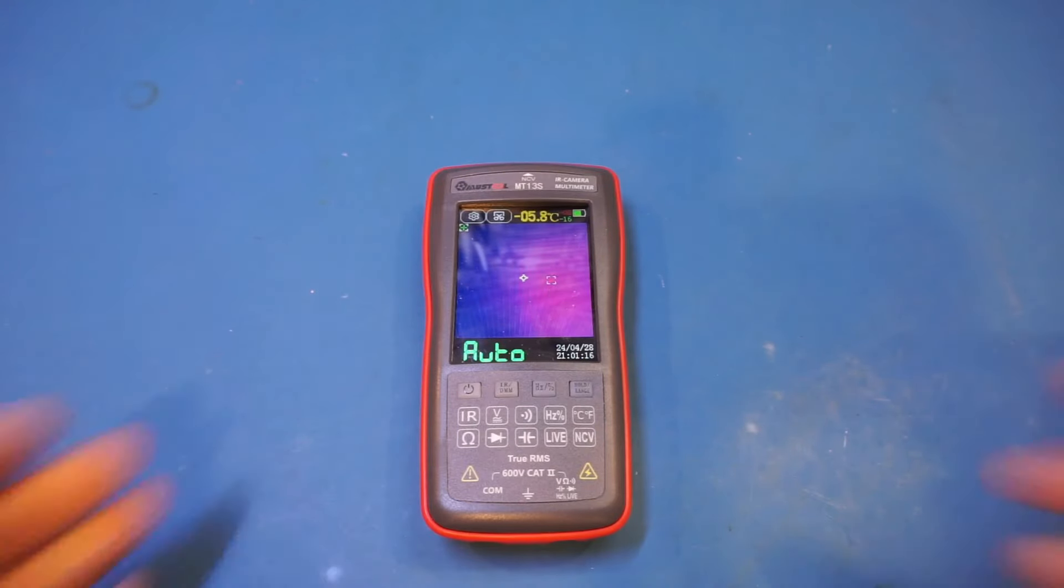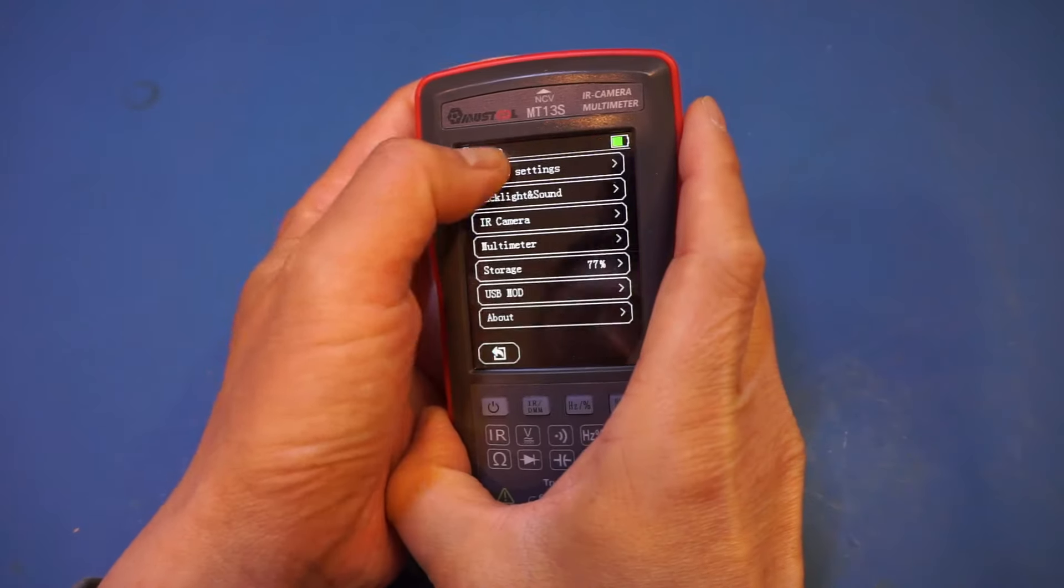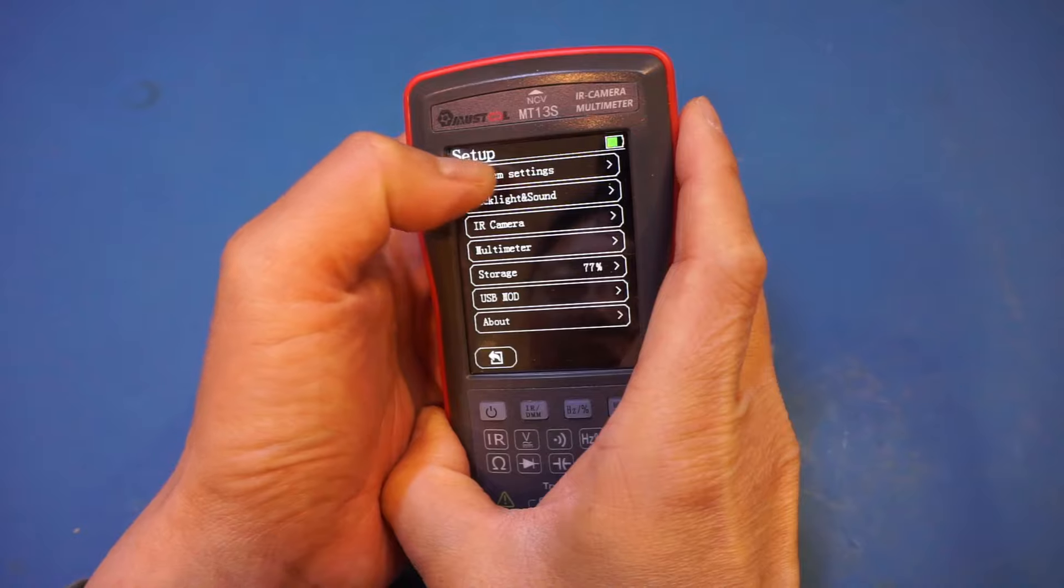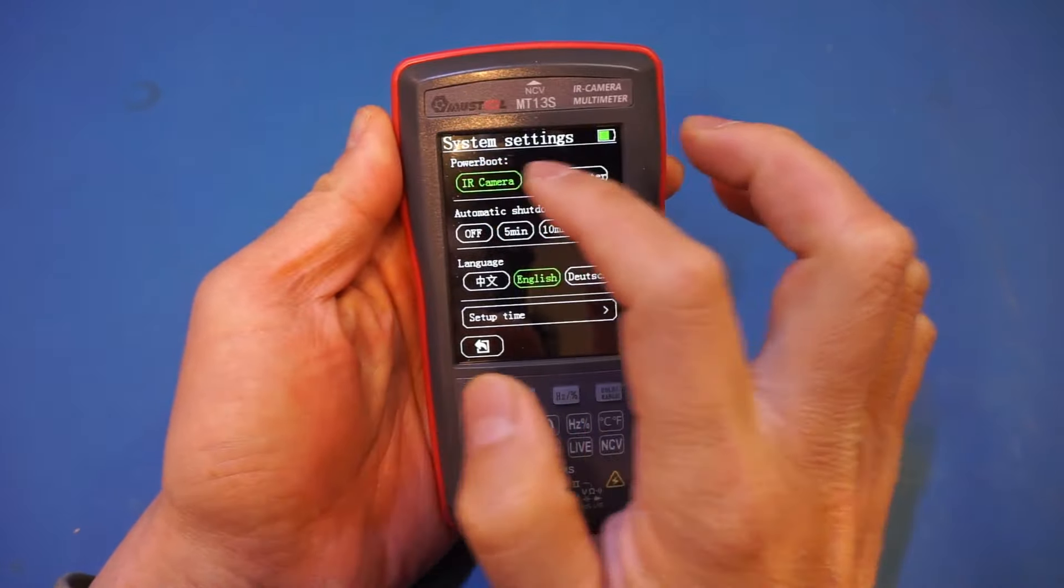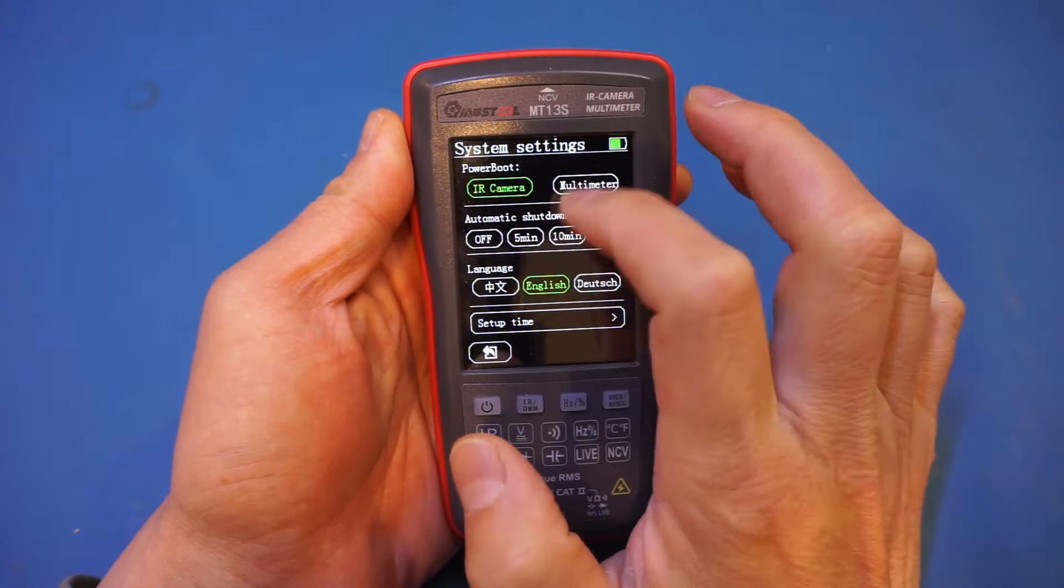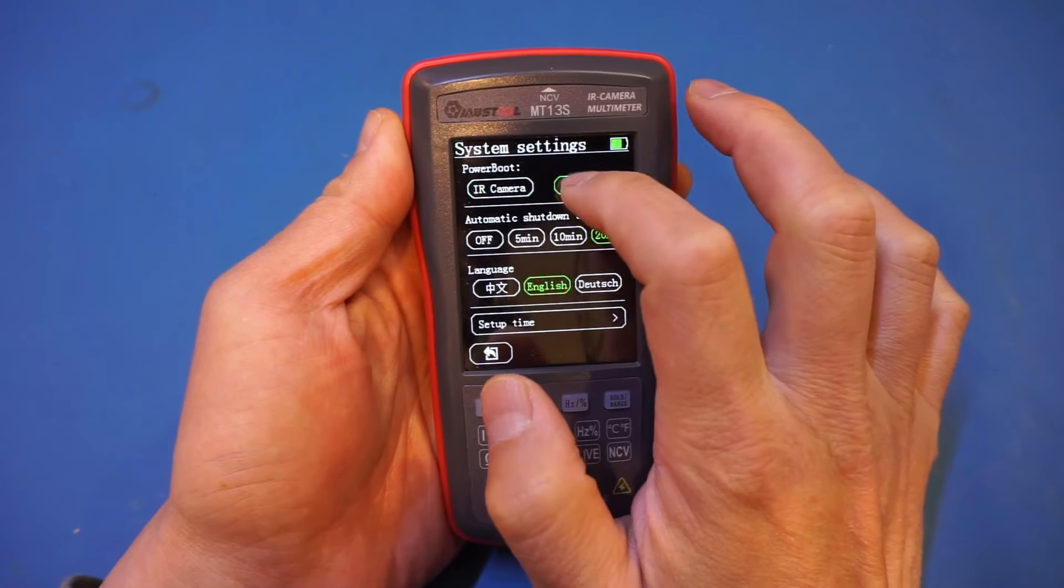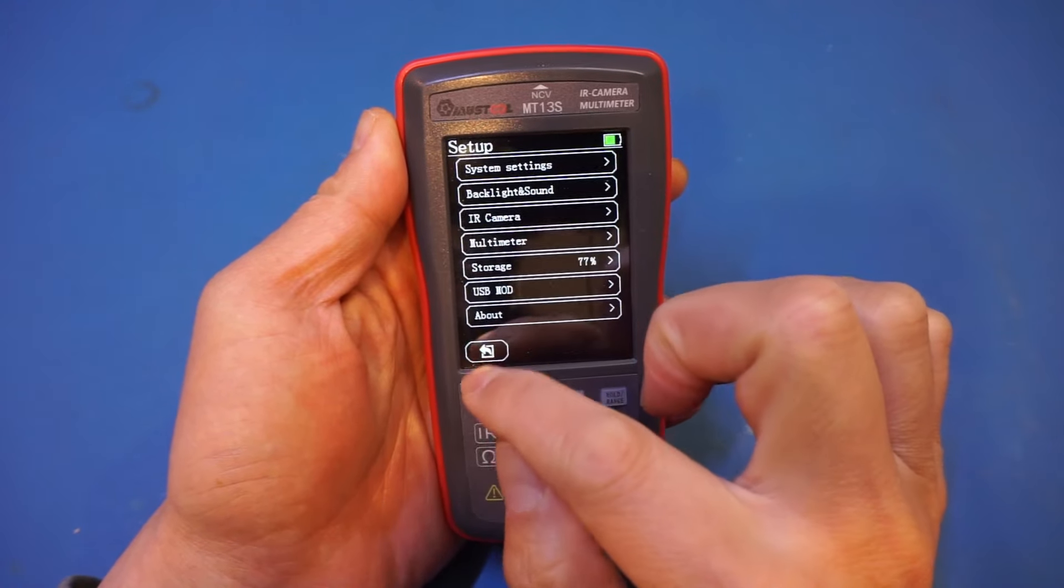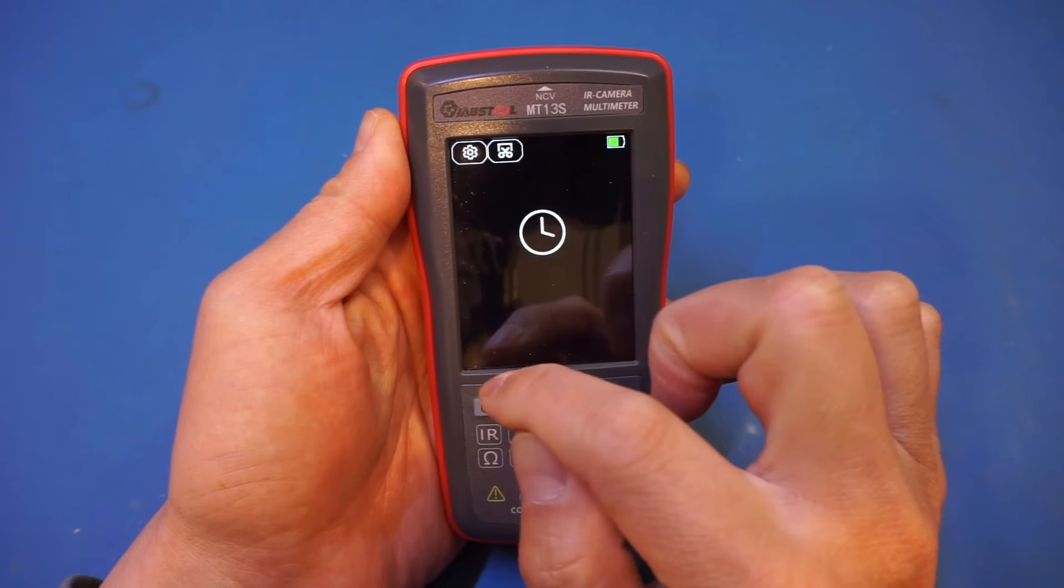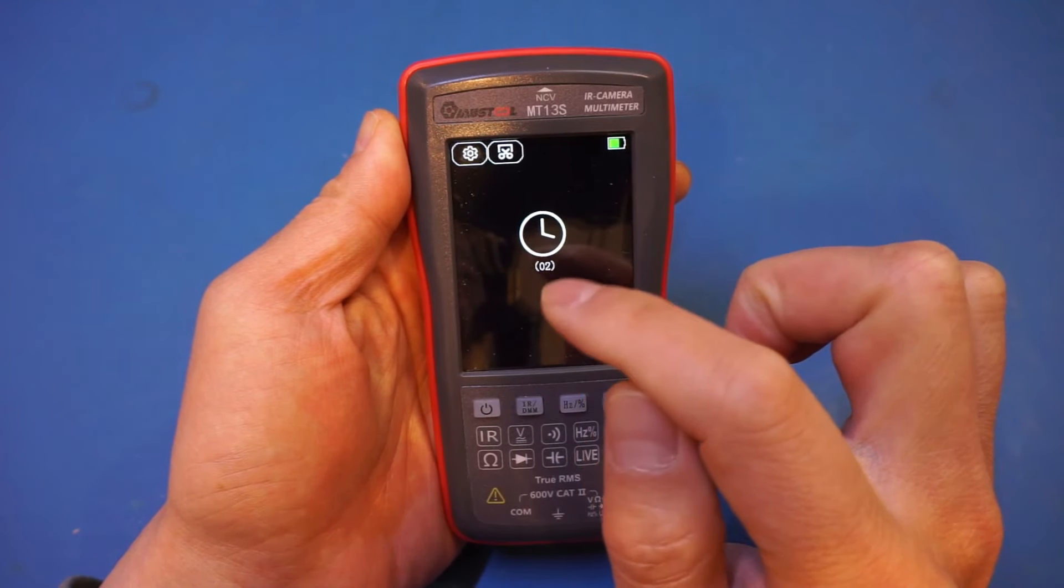So let me just show you the setting here. So to change that, I can go up here and change to system settings. And you can see here, the power boot, that's really your boot up mode. Right now it's set to IR camera. We can change it to multimeter. And the next time when we boot up, you'll be directly going into the multimeter mode. So that is the setting here.